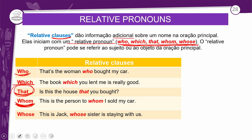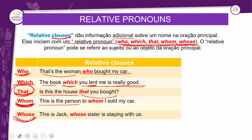And WHOSE — what does it talk about? Possession. So it relates to possession. Examples: 'That's the woman who bought my car.' 'The book which you lent me is really good.' 'Is this the house that you bought?' 'This is the person to whom I sold my car.' Notice that WHOM here is coming after a preposition, which is one of its uses. 'This is Jack whose sister is staying with us' — esse é o Jack cuja irmã está ficando com a gente.